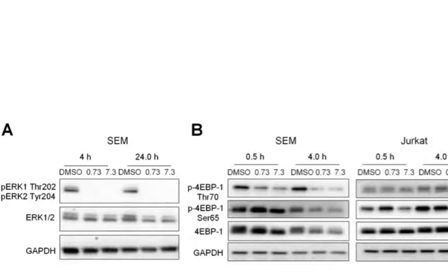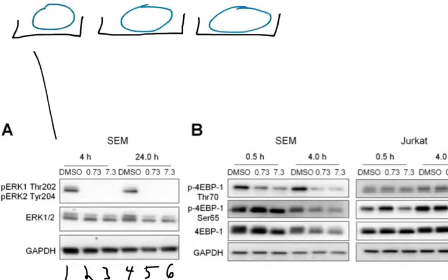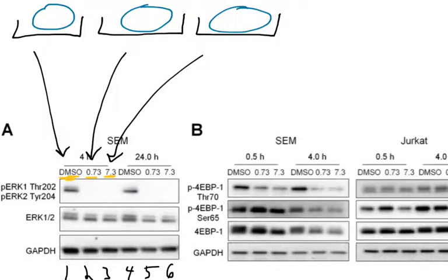If you look at this blot on the left, let's number the lanes: lanes 1, 2, 3, 4, 5, and 6. Usually above the lanes is written something that indicates how the samples were treated. Above the lanes there are terms like DMSO, 0.73, and above that it says 4 hours, in lanes 1, 2, and 3, and next to it is 24 hours.